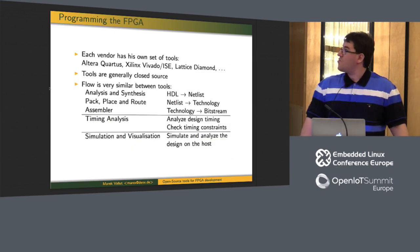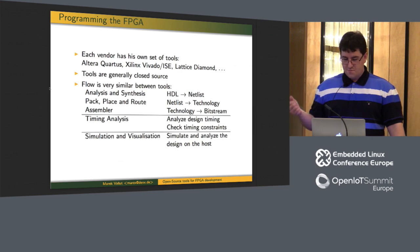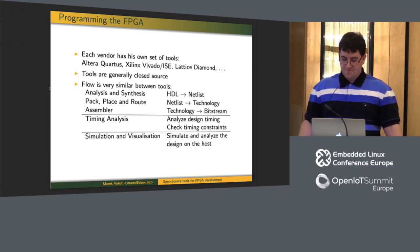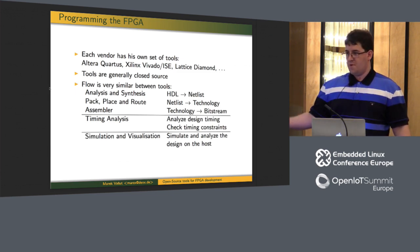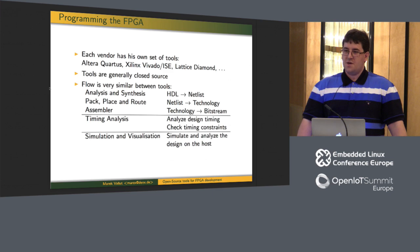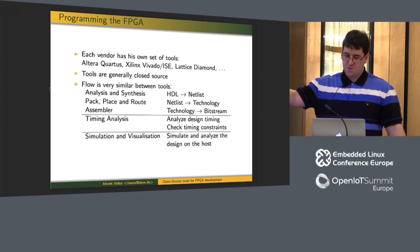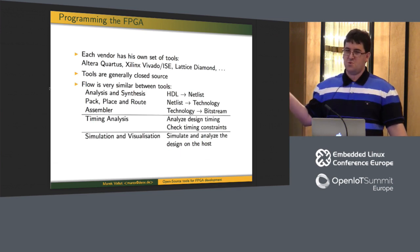Let's look at how we program the FPGA. Each vendor provides a toolchain — typically proprietary, closed source, big packages, in the ballpark of tens of gigabytes. Altera has Quartus, Xilinx has Vivado and ISE. If you analyze what these vendor tools really do to get from source to bitstream, you can divide it into three steps: analysis and synthesis, then place and route, and finally assembler. On the side there are two more steps: timing analysis (important for high-speed designs) and simulation and visualization.